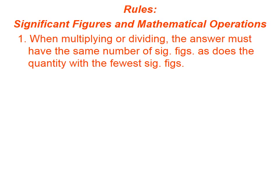When multiplying or dividing, the answer must have the same number of sig figs as does the quantity with the fewest sig figs. In other words, whenever we're multiplying or dividing, we need to get our fingers out and count the sig figs in this quantity, count the sig figs in that one, count the sig figs in that one, whatever we're multiplying or dividing, and whatever the smallest number that we come up with is, that's how many significant figures we need to have in our answer.